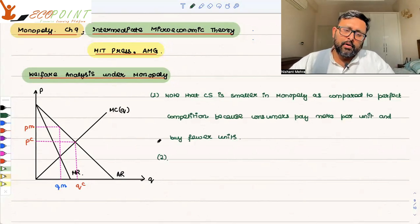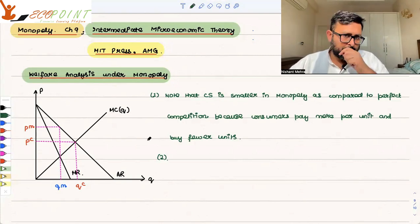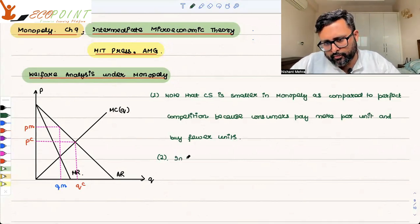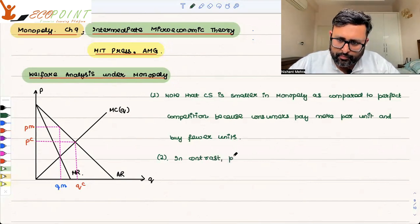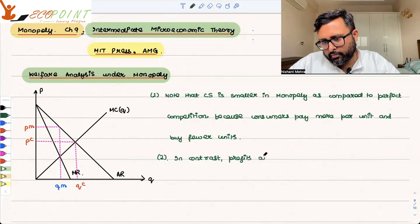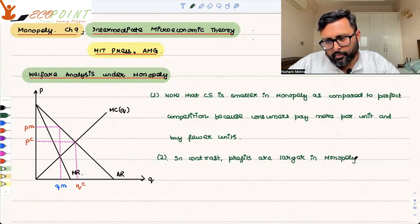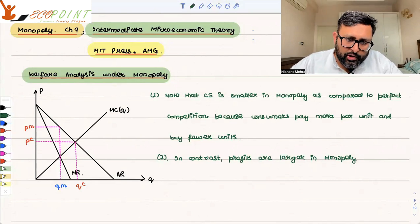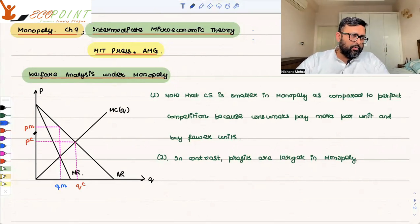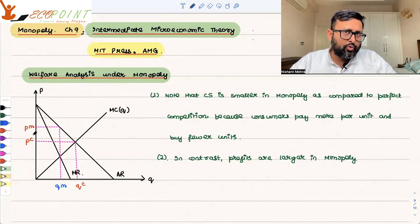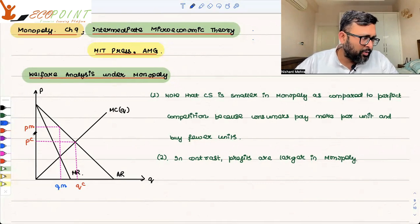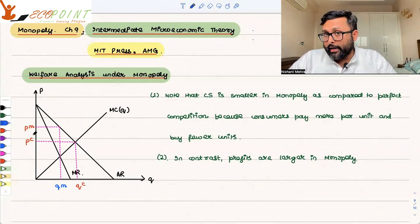Second, under monopoly, profits are larger. In perfect competition, there is hardly any profit — in the long run, there are no profits. So the question which arises is whether the gain in the firm's profit is going to offset the loss in consumer surplus in monopoly, and will it give rise to an increase in social welfare?